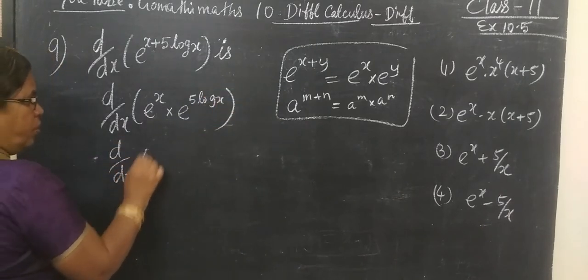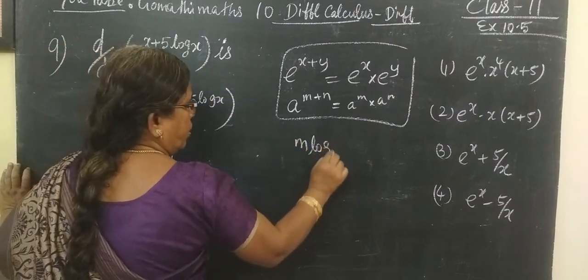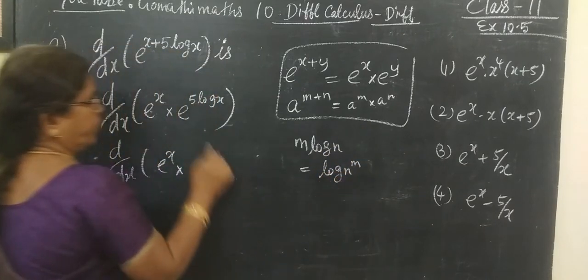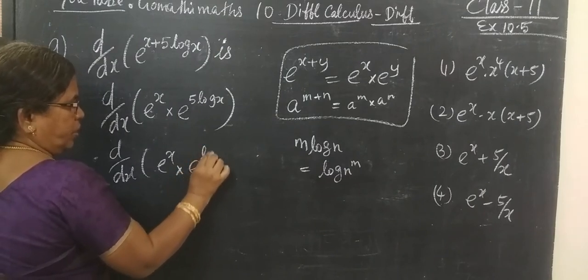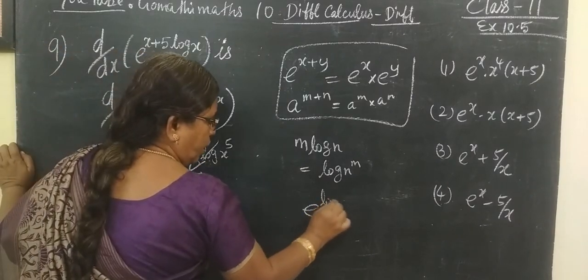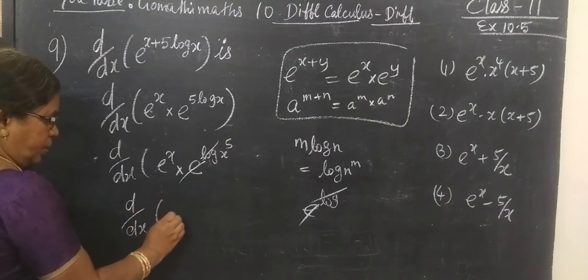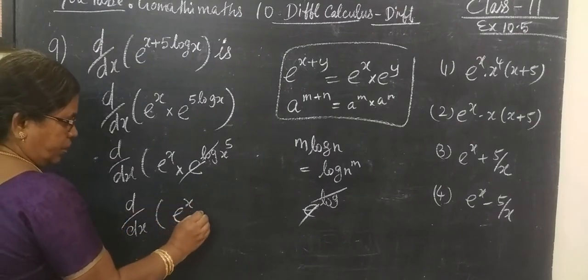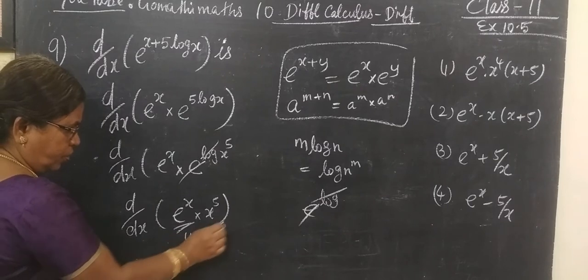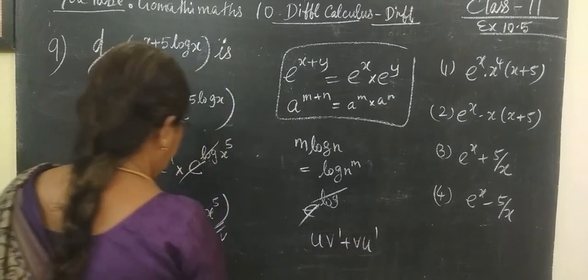So d/dx of e^x into e^(π·log x). Now using log rule: m·log n equals log(n^m), so π·log x equals log(x^π). Therefore e^(log x^π) equals x^π, since the exponential and logarithm cancel. So we get d/dx of e^x into x^π, and we apply the UV method — this is u and this is v.